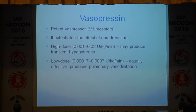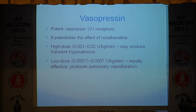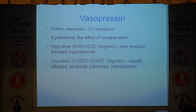Vasopressin is a potent vasopressor — it potentiates the effects of noradrenaline via V receptors. High doses can be used but can cause transient hyponatremia. What is of interest to us is that in normal physiological doses — 0.0017 to 0.0007 units per kg per minute — it is a very potent vasopressor, but at the same time it can cause pulmonary vasodilation. Some recent reports have shown that it works very well and has found improvement in oxygenation in patients ventilated for PPHN also.